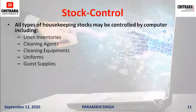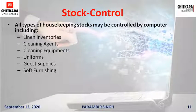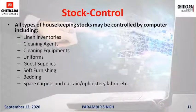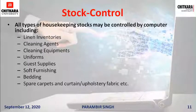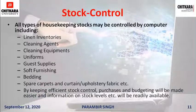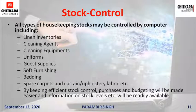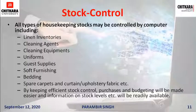Guest supplies can be controlled. Soft furnishings — like linen — can have their data stored with a count maintained. Bedding, spare carpets, curtains, upholstery fabric, and similar items can be tracked; since these are already in the rooms, we can check which room has what through the computers. By keeping efficient stock control, purchases and budgeting are made easier, with stock level information readily available at a click.